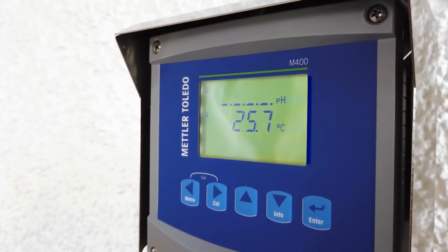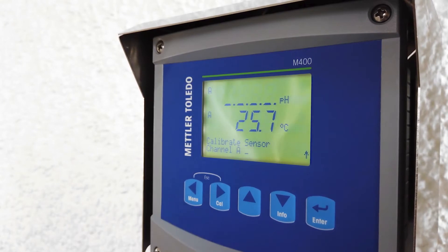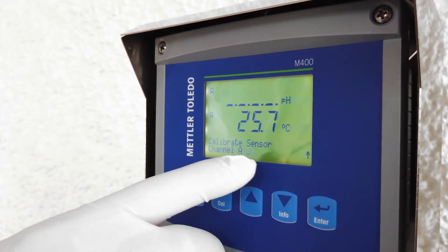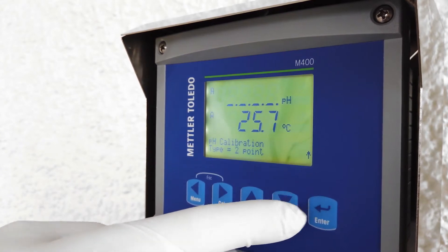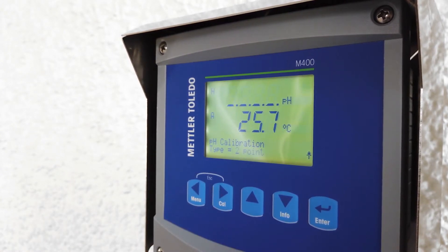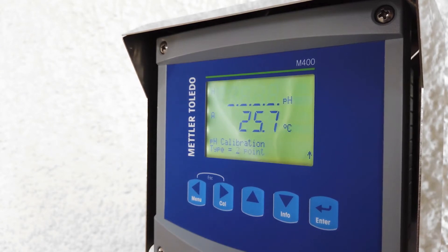On the transmitter, select the calibration menu by clicking on the calibration button. You will be required to pick the channel the sensor is connected to. Since this is a one-channel transmitter, you have only one channel, so select channel A. Then select two-point calibration and press enter.